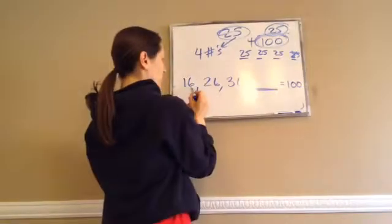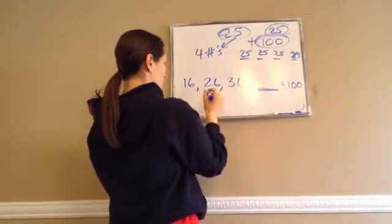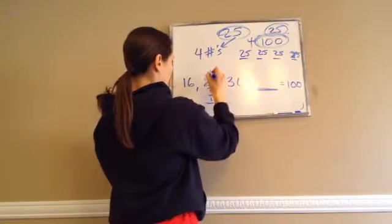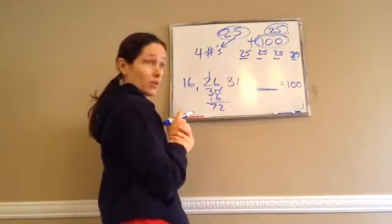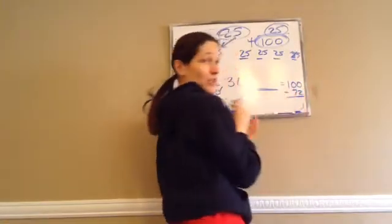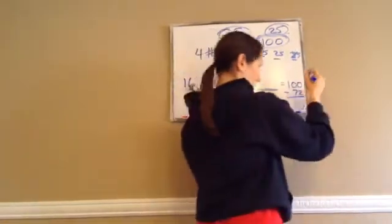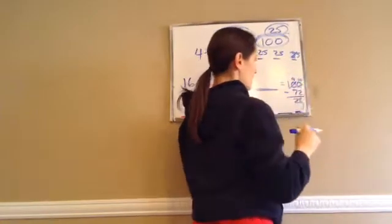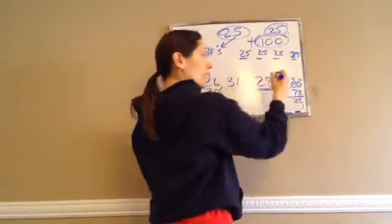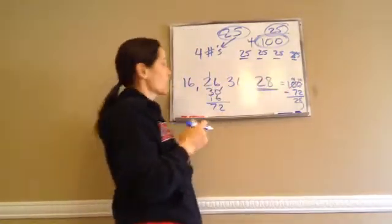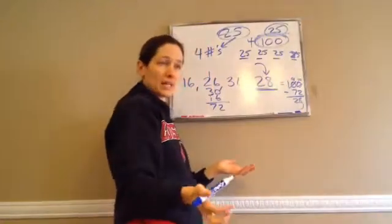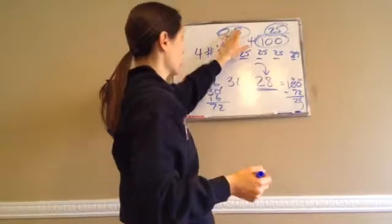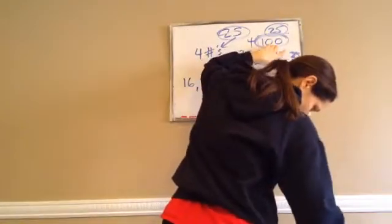So how do I figure out this fourth number? You add those three up, and whatever is left equals 100 — it has to equal 100 to get 25 as your average. So we're going to add 16 plus 26 plus 30. I subtract 72 from 100, and I end up getting 28. So what was the fourth score? You would say 28. It's important that you learn how to take your average and figure out your sum.